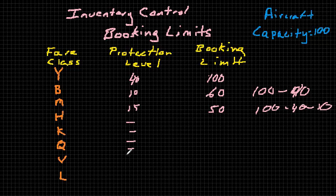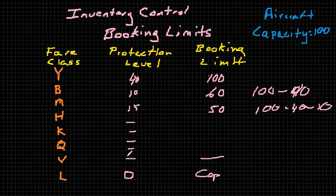You would continue all the way down in a similar manner until you get to the last fare class. There's no protection level for the lowest fare class, because you're not protecting those seats from being sold to lower fare customers — because there are none. The booking limit for the lowest class is the capacity minus all of the protection levels above it. So in this way, using this nesting structure, the airline is able to make their optimization model results a little bit more robust.